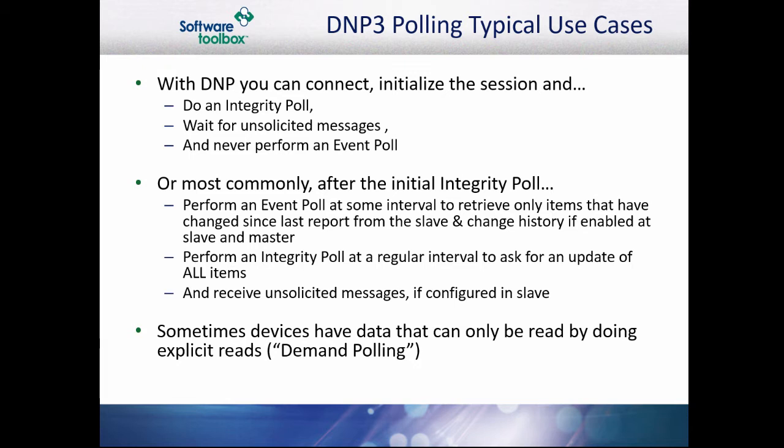More commonly, we see the event poll and unsolicited messaging mixed. After the initial integrity poll, you will perform event polls at regular intervals, integrity polls at infrequent intervals, and listen for unsolicited messages if the slave is configured for such. Sometimes devices have some data points that can only be read explicitly from the device — this is the demand polling option. The only other use case we have encountered for demand polling is regulatory reporting requirements that require a point or points to be reported at specific intervals regardless of value change.